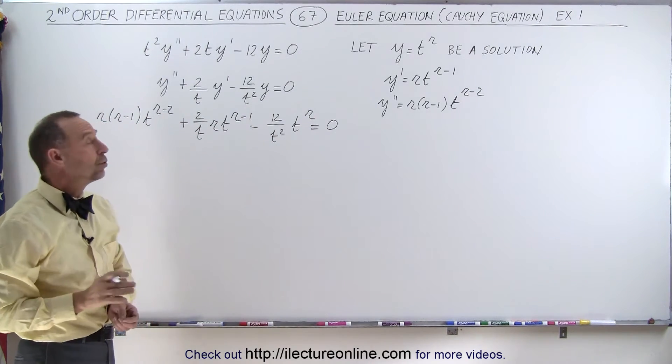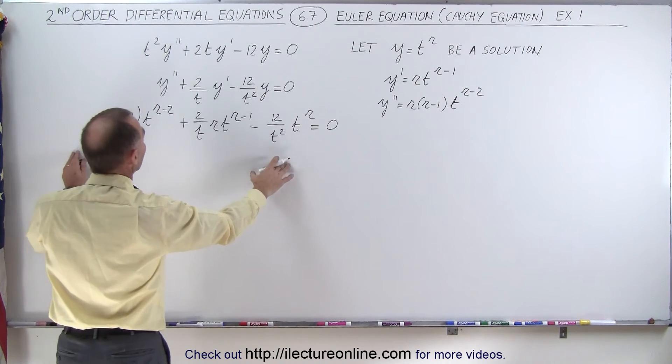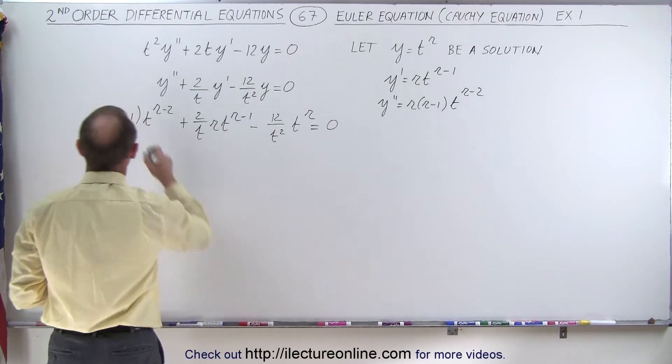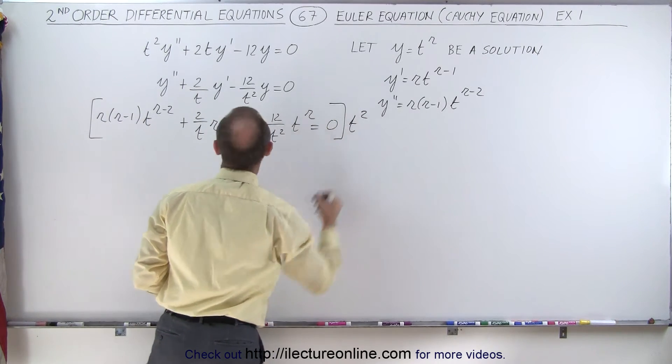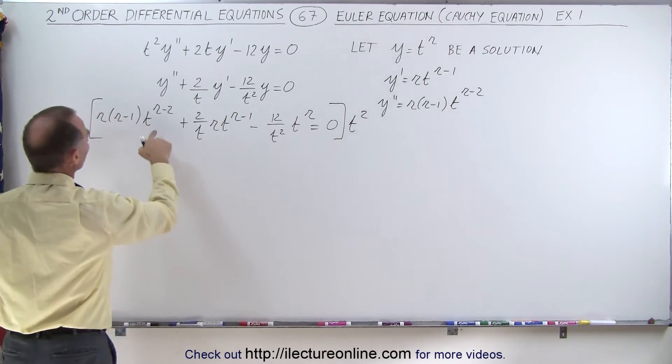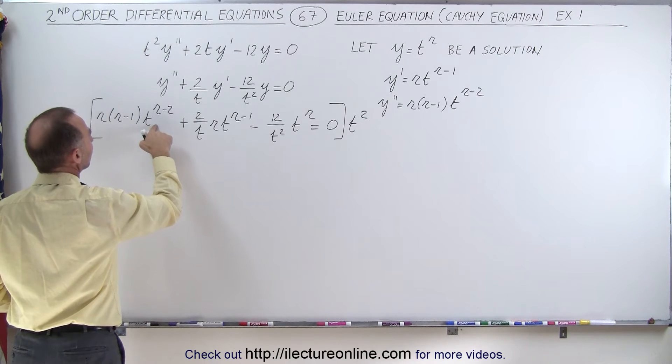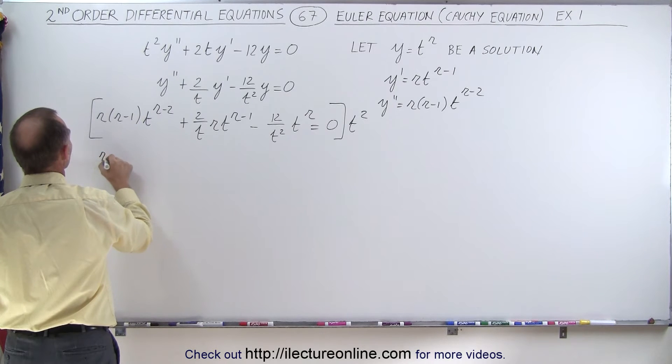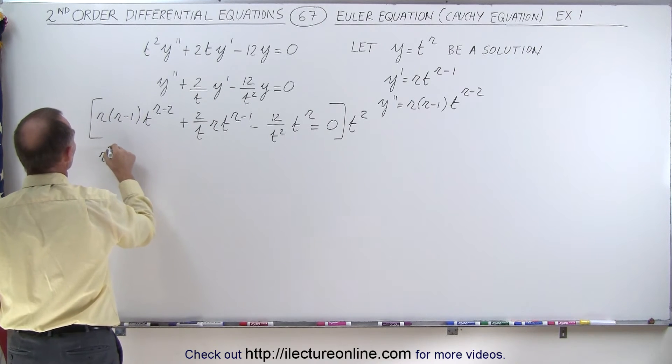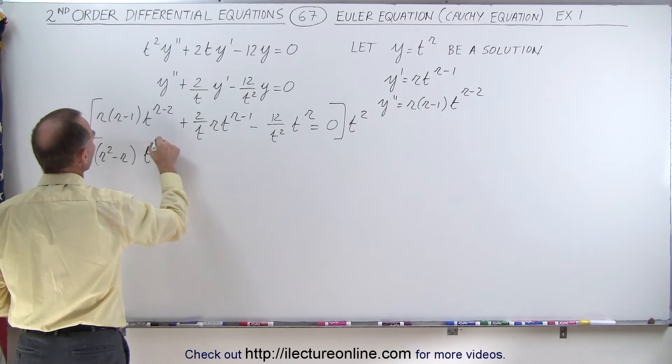The next thing we're going to do is multiply both sides of the equation by t squared. When we do that, we multiply this times t squared, that gives us t to the r power. So we have r, and I can multiply this out, so this is r² - r times t to the r power.